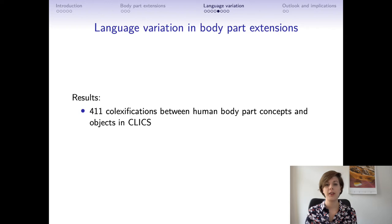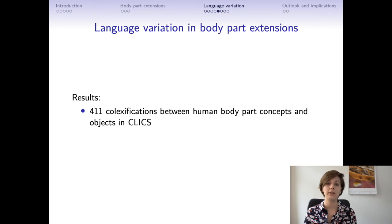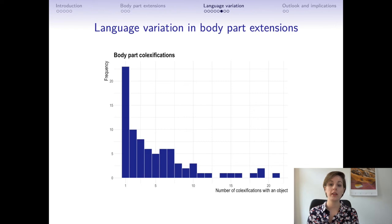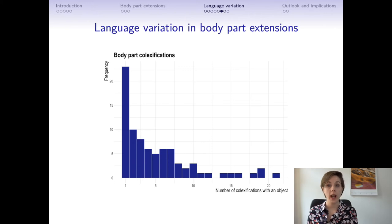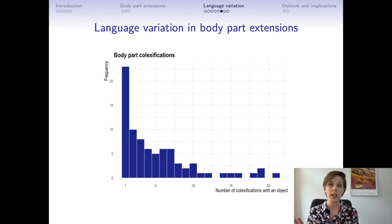The results show that there are 411 colexifications between human body part concepts and objects in the CLIX database — a lot of data to work with. In this graph we see the number of colexifications of body part terms with objects. Most body part terms are colexified with only one object, whereas 'head,' for example, is colexified with more than 20 objects. Other body parts used across a broad range of objects include skin, eye, and tooth, each colexified with more than 10 objects.